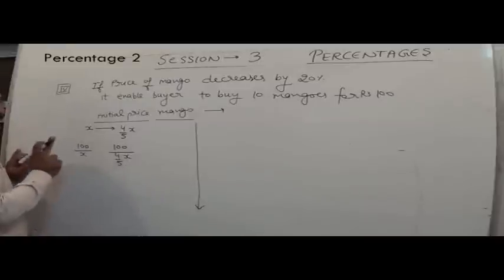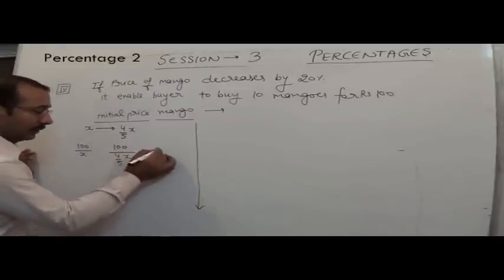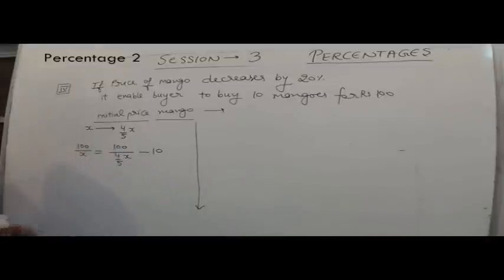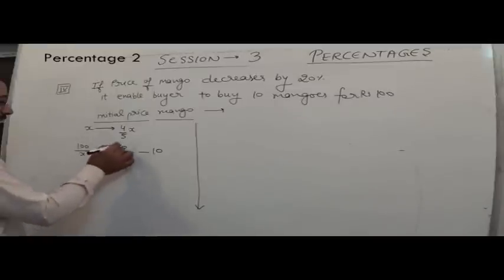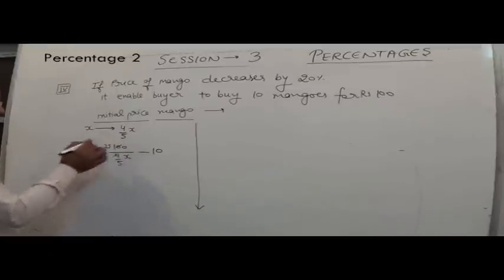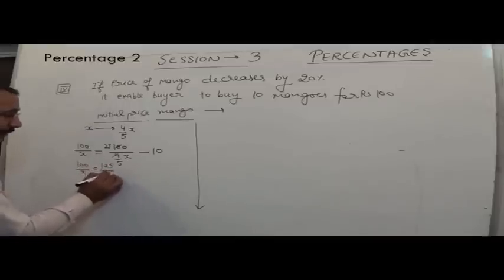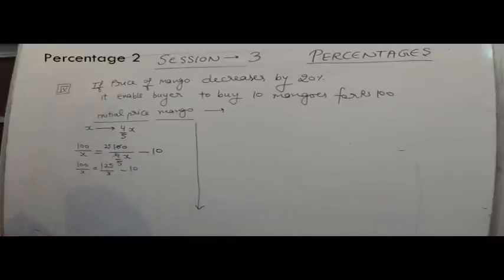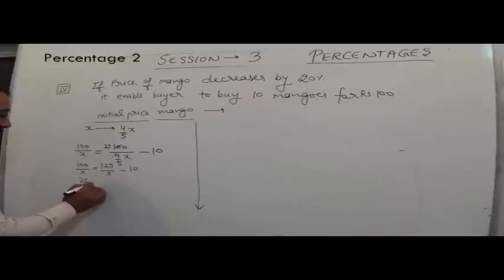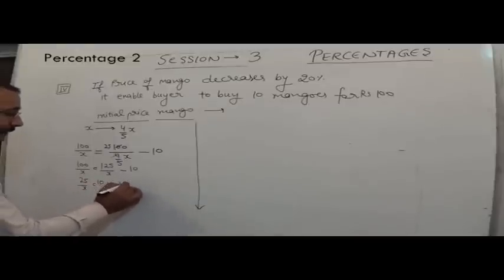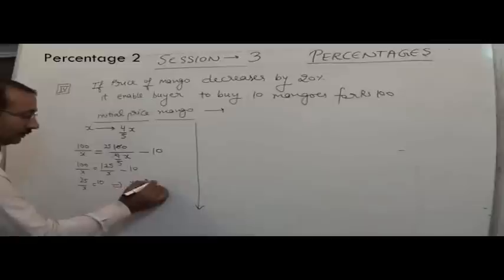This quantity is 10 more than the first. If I subtract 10, both are equal. After solving: 4 cancels to 25, 5 comes up. We get 100/x = 125/x − 10, or 25/x = 10, so x = ₹2.5. The initial price per mango is ₹2.5.